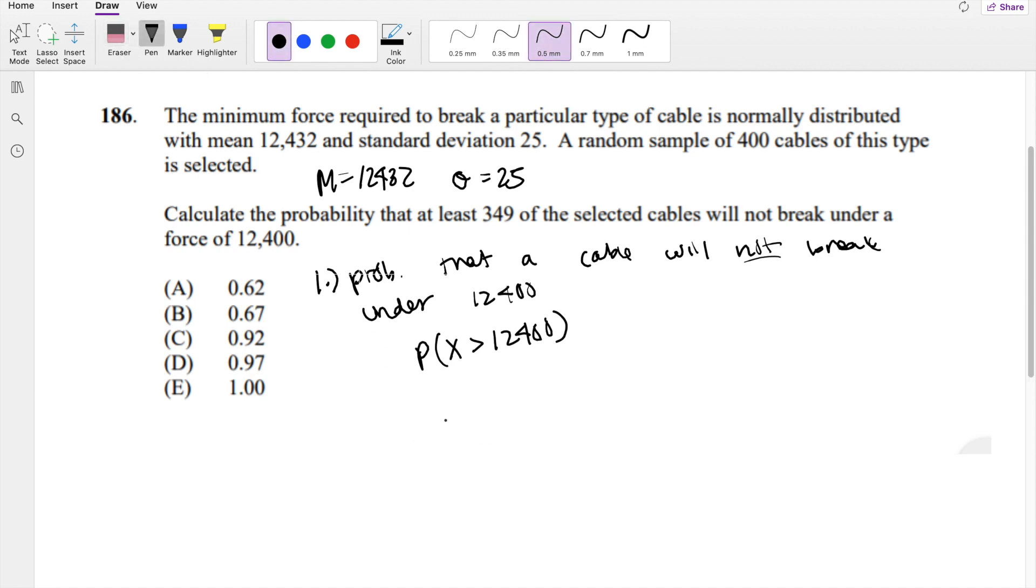So then we can normalize this. Probability of x minus mean over standard deviation is greater than 12,400 minus 12,432 divided by standard deviation. We know this is the definition of z. Z is greater than negative 1.28.